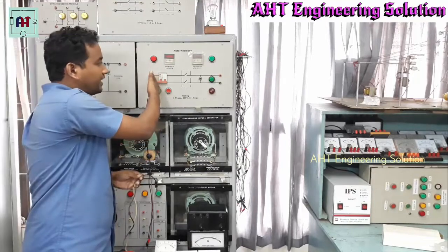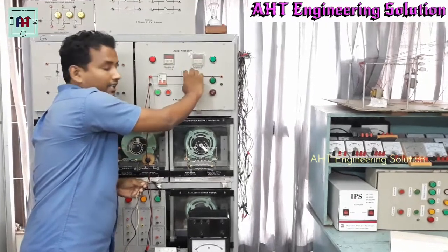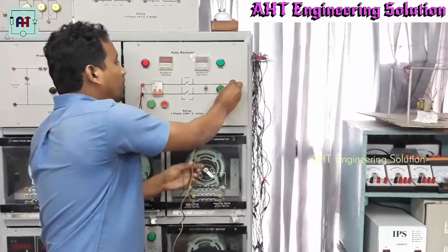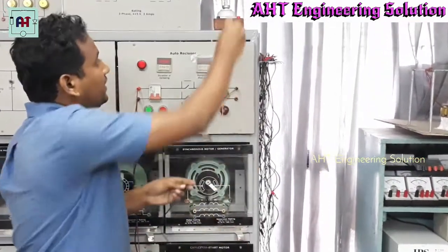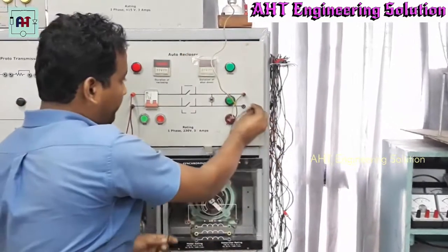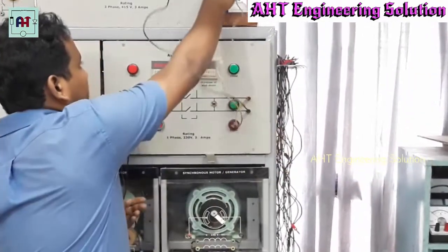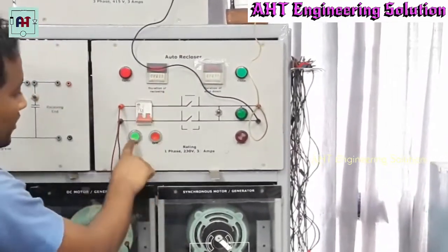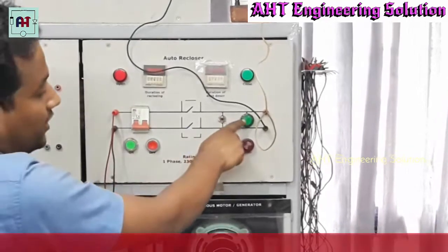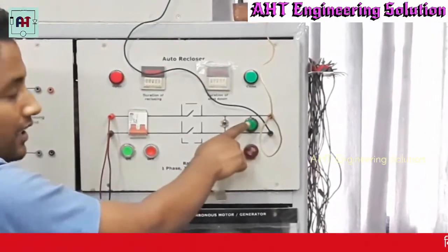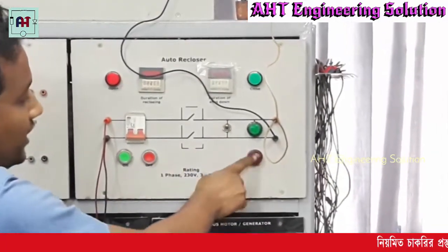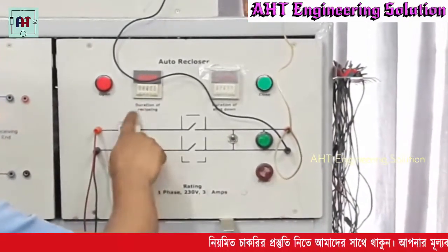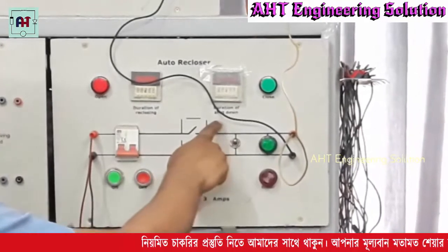This is the sending end, this is our transmission line, and this is our receiving end. The receiving end is connected to a normal load. This is our circuit breaker with on and off switch. This is the transmission line indicating lamp. This is the load active indicator. This is the fault creation switch.